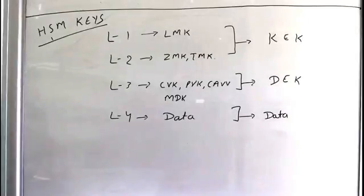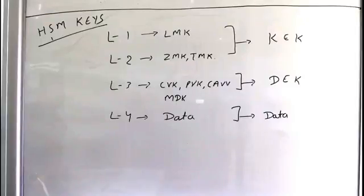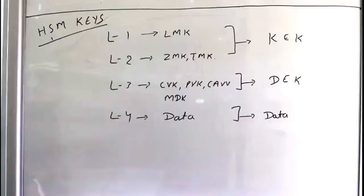Broadly we can divide HSM keys into four different levels. Level one is the Local Master Key (LMK). Level two is ZMK — Zone Master Key — and TMK — Terminal Master Key. Level three is the CVK, PVK, and CVMDK — keys you might have heard about while working in this domain.